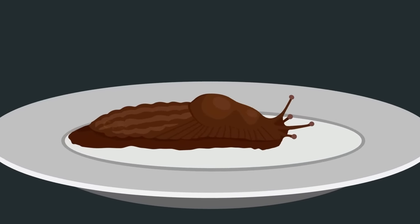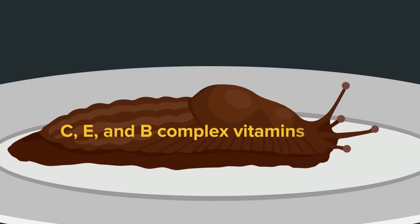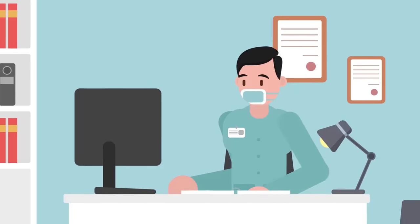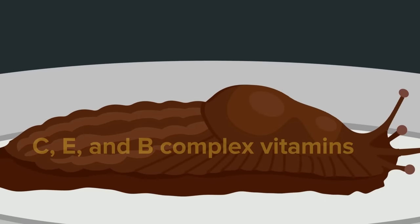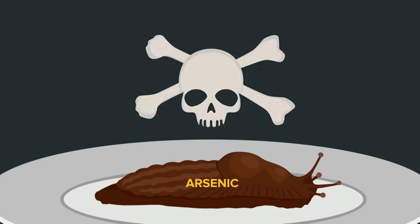There are both advantages and disadvantages to actually eating these slugs. The advantage is that they contain large amounts of Vitamin C, E, and most of the B complex, which are all crucial to a healthy and balanced diet. The disadvantage is that they contain large amounts of Arsenic, which will kill you.